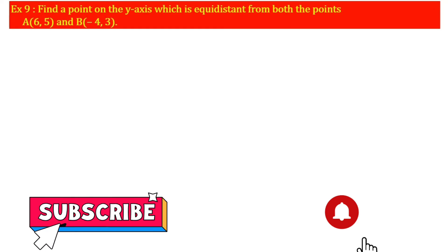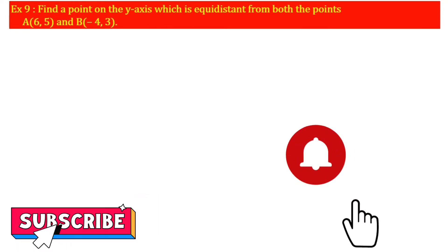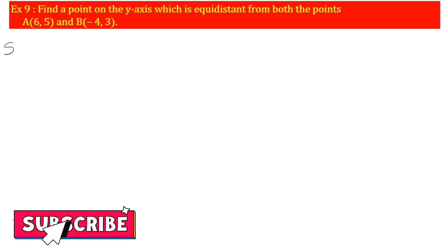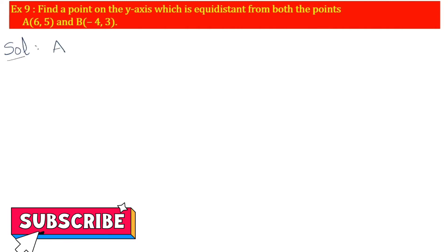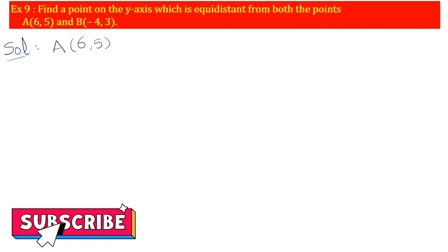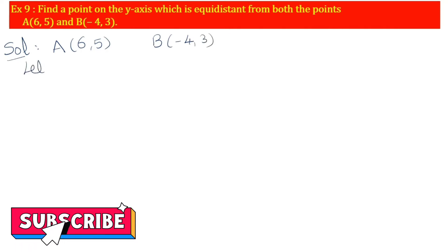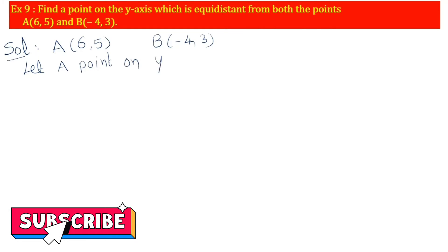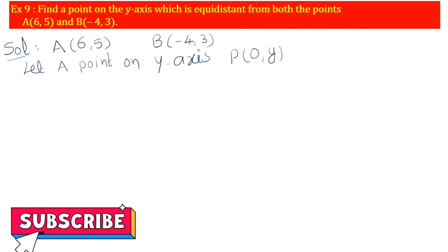So observe the question. A point on the y-axis — that point P — is equal distance from A and B. First of all, write the given data: A is (6, 5), B is (-4, 3). Let a point on the y-axis be P. You know that the x-coordinate on the y-axis is 0, so P is (0, y).